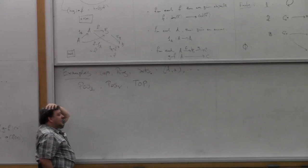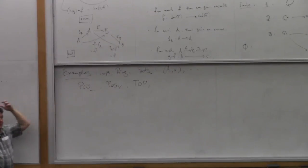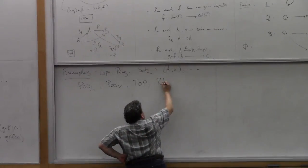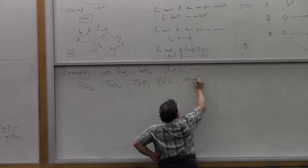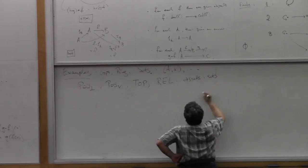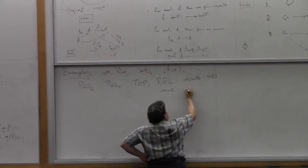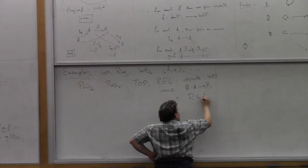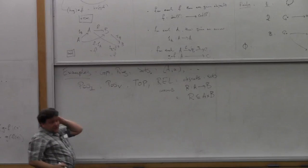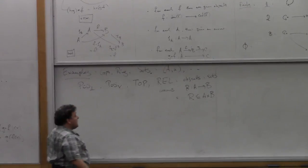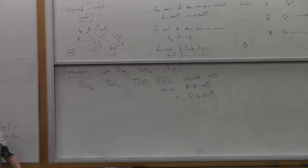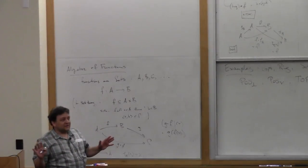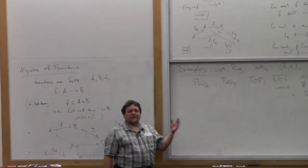Not to give the impression that arrows in a category are always functions — that's a popular misconception. For example, there's the category of relations, where the objects are sets but the arrows are relations: an arrow R from A to B is an arbitrary relation on A × B, not necessarily functional. You then need a clever way of defining composition of relations. There are also lecture notes and a book available on the web for this course.